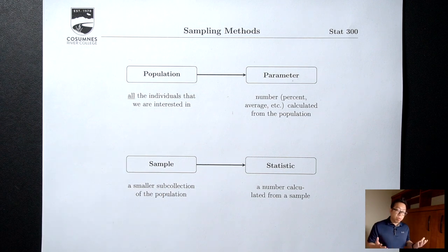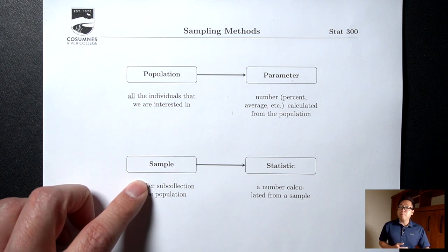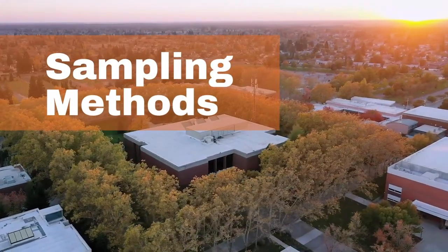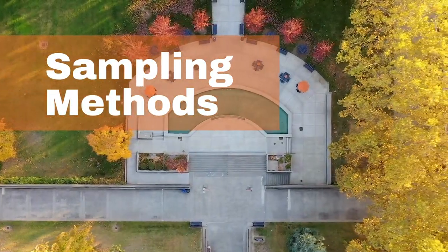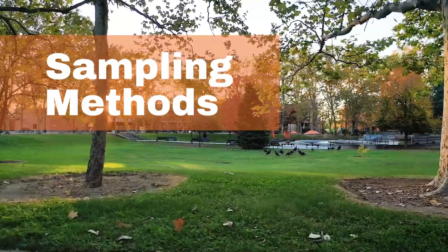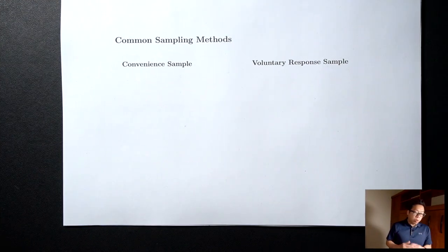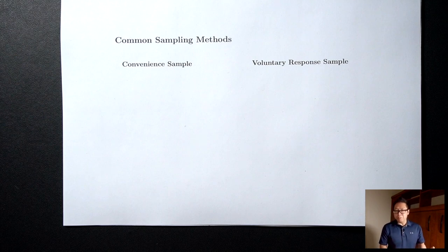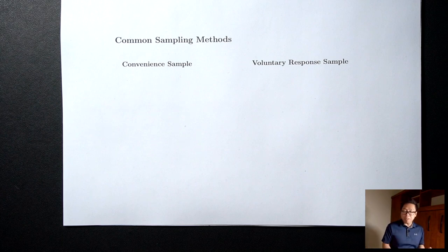Today we'll talk about how we pick the people in our sample. The first two methods I want to talk about are actually not good methods to use — we'll get to the reason why in a second. The first method is called convenient sample, and it's exactly what it sounds like: you're going to pick the people who are most convenient or easiest to pick.